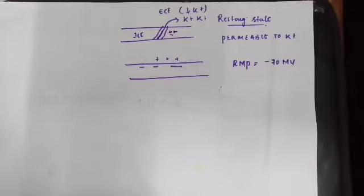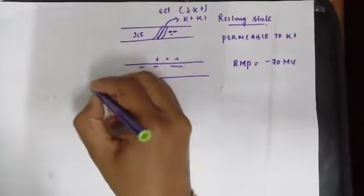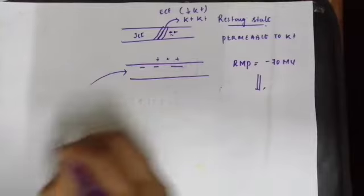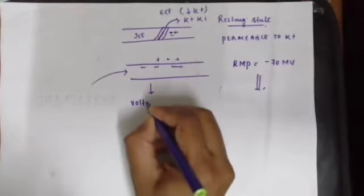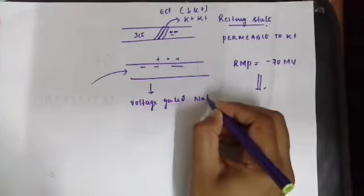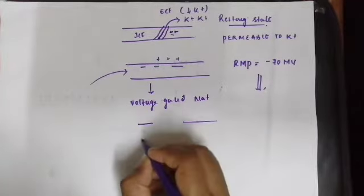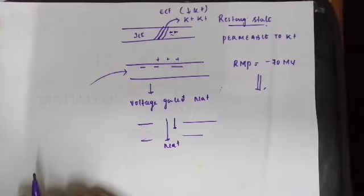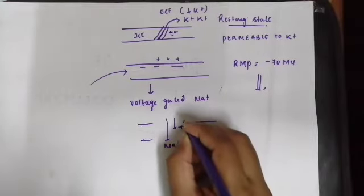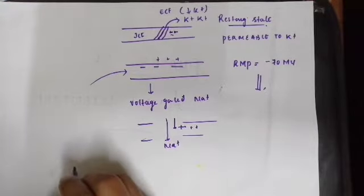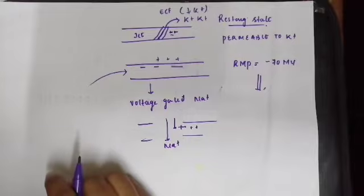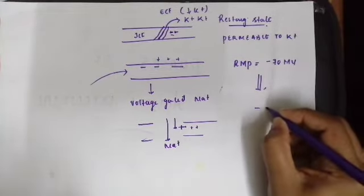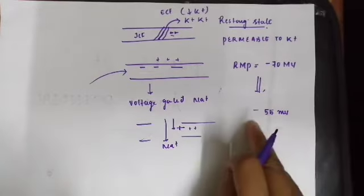If you apply a depolarizing stimulus to this cell, some of the voltage-gated sodium channels start opening. These voltage-gated sodium channels allow sodium to enter into the cell. Because sodium is a positive charge entering the cell, the inside of the cell becomes positive. This change of polarity is called depolarization. The membrane potential changes from minus 70, becoming more positive, reaching minus 55 millivolt.